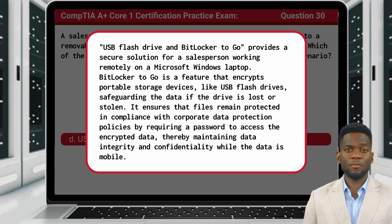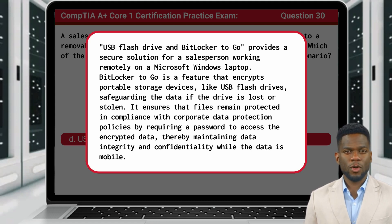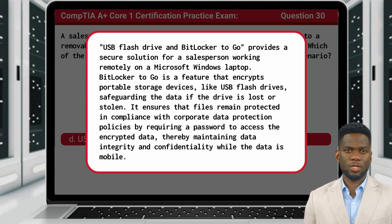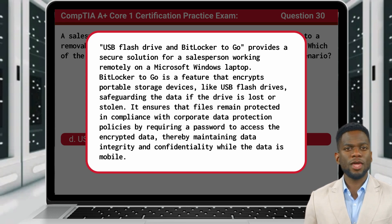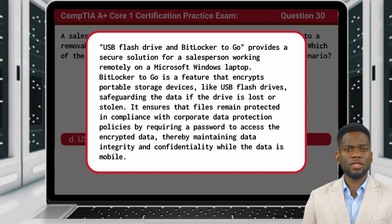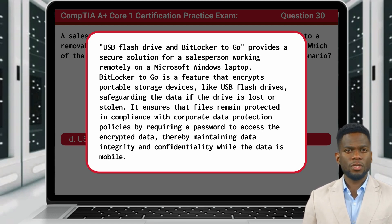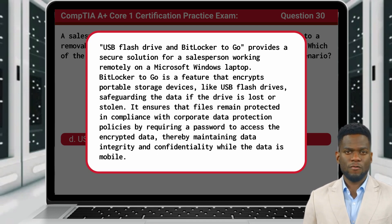USB flash drive and BitLocker To Go provides a secure solution for a salesperson working remotely on a Microsoft Windows laptop. BitLocker To Go is a feature that encrypts portable storage devices like USB flash drives, safeguarding the data if the drive is lost or stolen. It ensures that files remain protected in compliance with corporate data protection policies by requiring a password to access the encrypted data, thereby maintaining data integrity and confidentiality while the data is mobile.